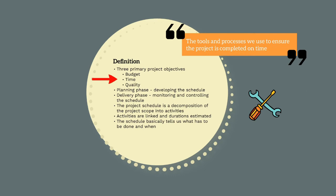The project schedule lists all of the milestones, activities, and deliverables with start and finish dates for the entire project. During the delivery phase, we monitor planned performance against actual performance, and this allows us to identify and rectify any deviations to ensure the project is completed on time.